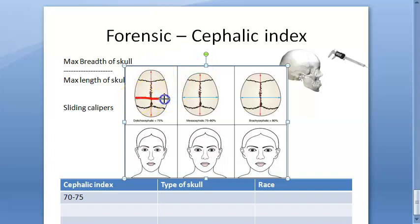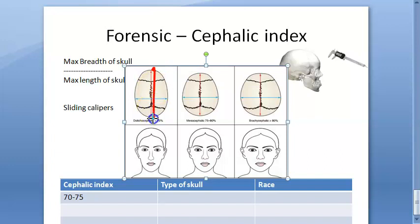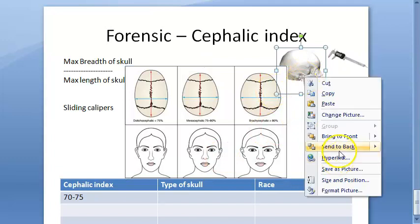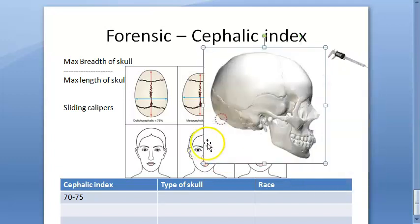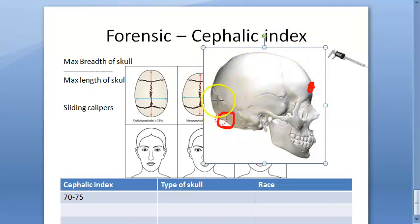Between the two parietal eminences you are taking the breadth. The length is the distance between the glabella and the external occipital protuberance. This is the external occipital protuberance shown in the diagram. From here to the glabella, whenever you take the distance, that will become the length.